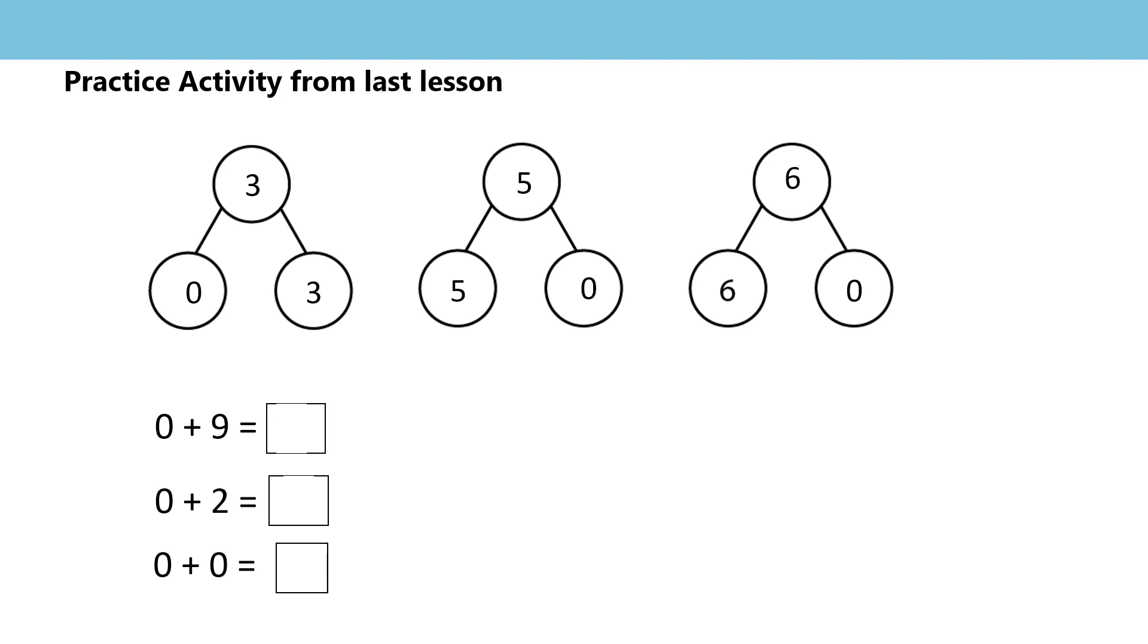Let's see what you got for your answers for the second part. 0 plus 9 is 9. 0 plus 2 is 2. 0 plus 0, this might have made you think a bit more. There are 0 children on the bus, 0 more children got on the bus, so in total there are 0 children on the bus. Well done everybody.